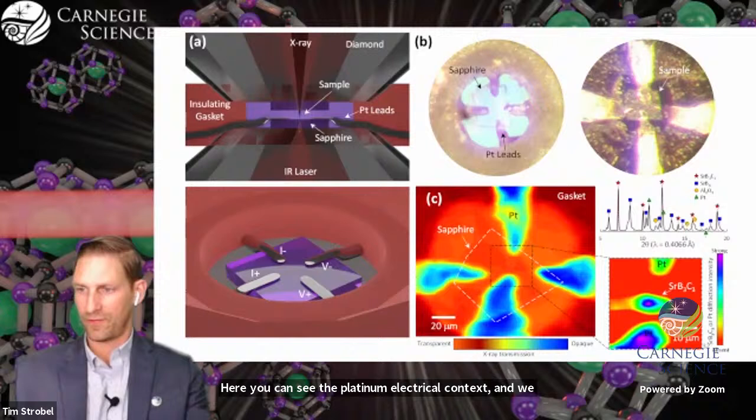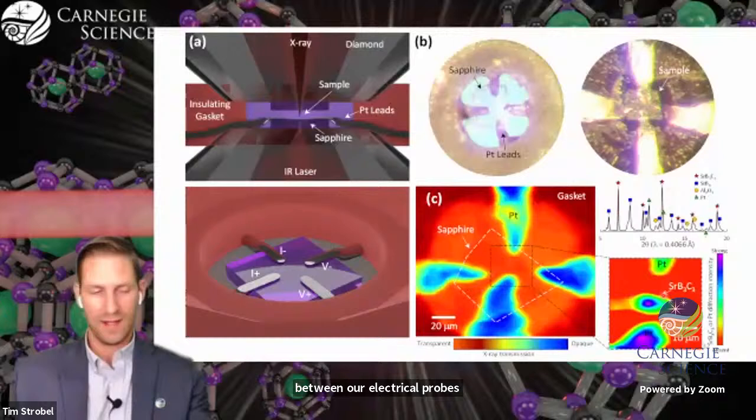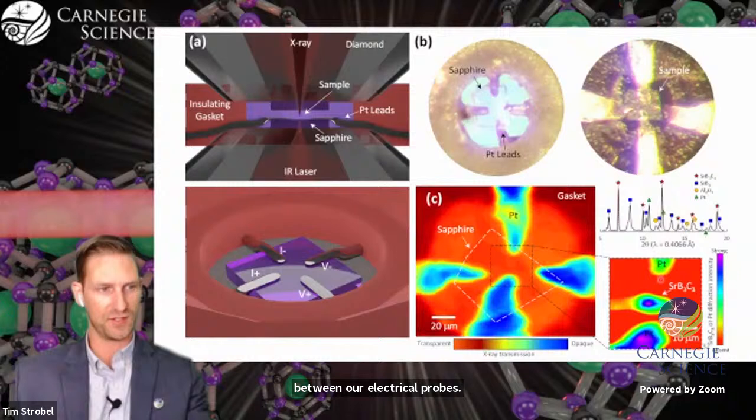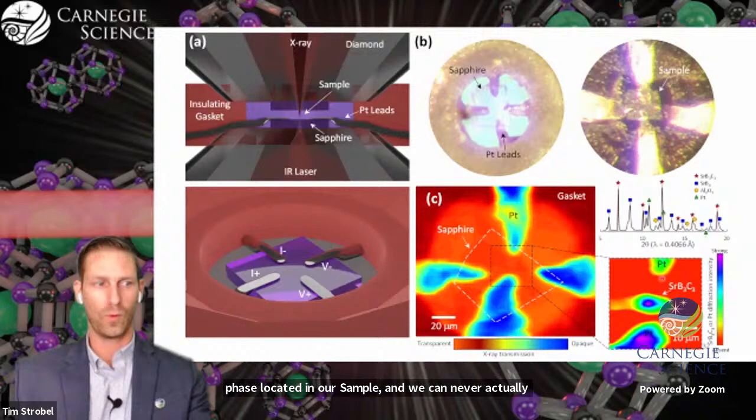This X-ray diffraction map shows that we have synthesized the SRB3C3 clathrate in the center of the diamond cell between our electrical probes. One limitation, however, is that we are unable to heat directly at our electrical contacts and therefore unable to synthesize superconducting phase in direct contact with our probes. This means there will always be a resistive phase located in our sample.